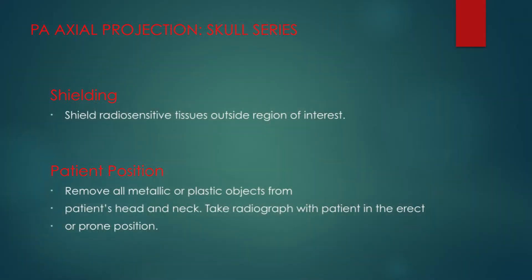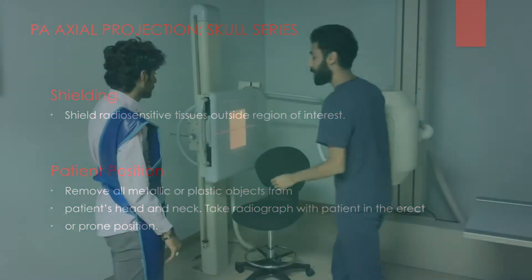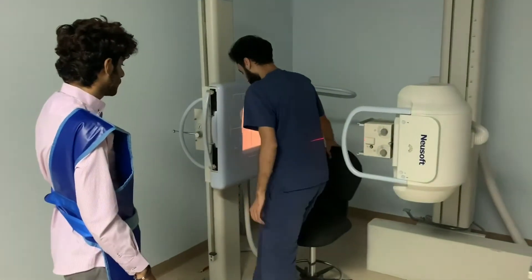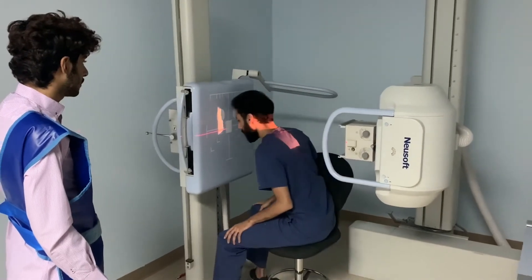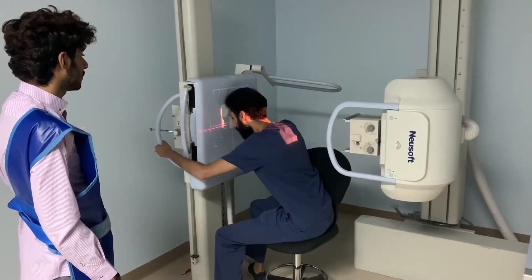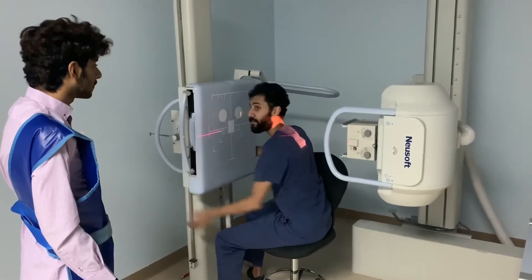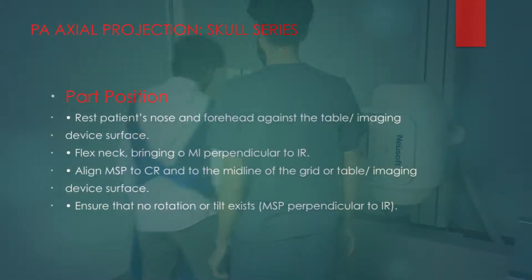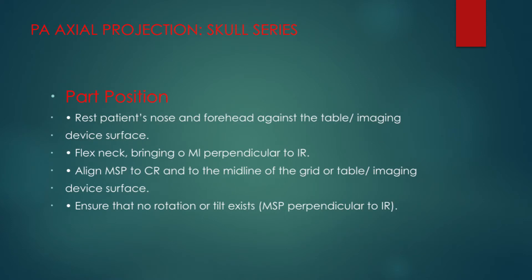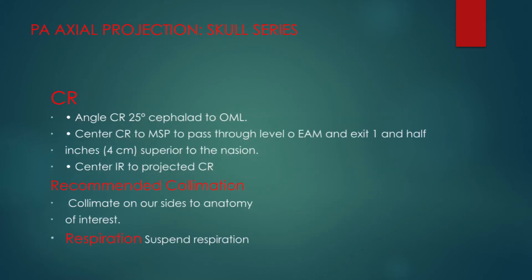The BA axial patient position can be erect or prone. Again, the radiographer will help the patient by demonstrating the position so that he can do it without any confusion. Part position: rest patient's nose and forehead against IR, flex neck bringing OML perpendicular to IR. Center ray: angle CR 25 degrees cephalad to OML.